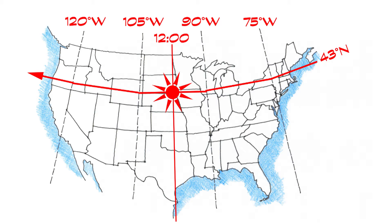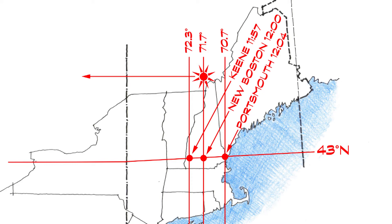This worked well until the late 1800s. Using New Boston as an example, assuming that the sun is aligned with the town's meridian, that would make it noon there. A sundial located a few miles east in Portsmouth, New Hampshire, will read 12:04 because the sun passed that meridian about four minutes ago. Looking west, it will be another three minutes before the noon sun is aligned in Keene, so it would be 11:57 there. Though these towns are close together, they each have their own time — local apparent time.